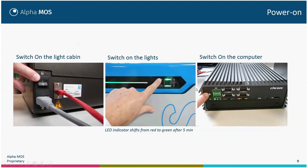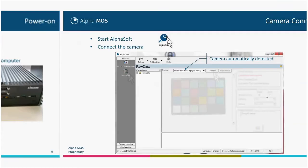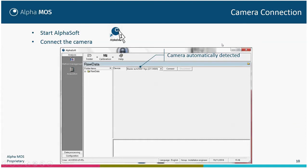The LED will be red first and will turn green after five minutes, but even before five minutes the light can be stable. Then you can switch on the computer with this button. One of the first things to do in AlphaSoft — when you open AlphaSoft, you double-click on the AlphaSoft icon, then go to Analysis > Acquisition, and the camera will be automatically detected using an Ethernet connection.